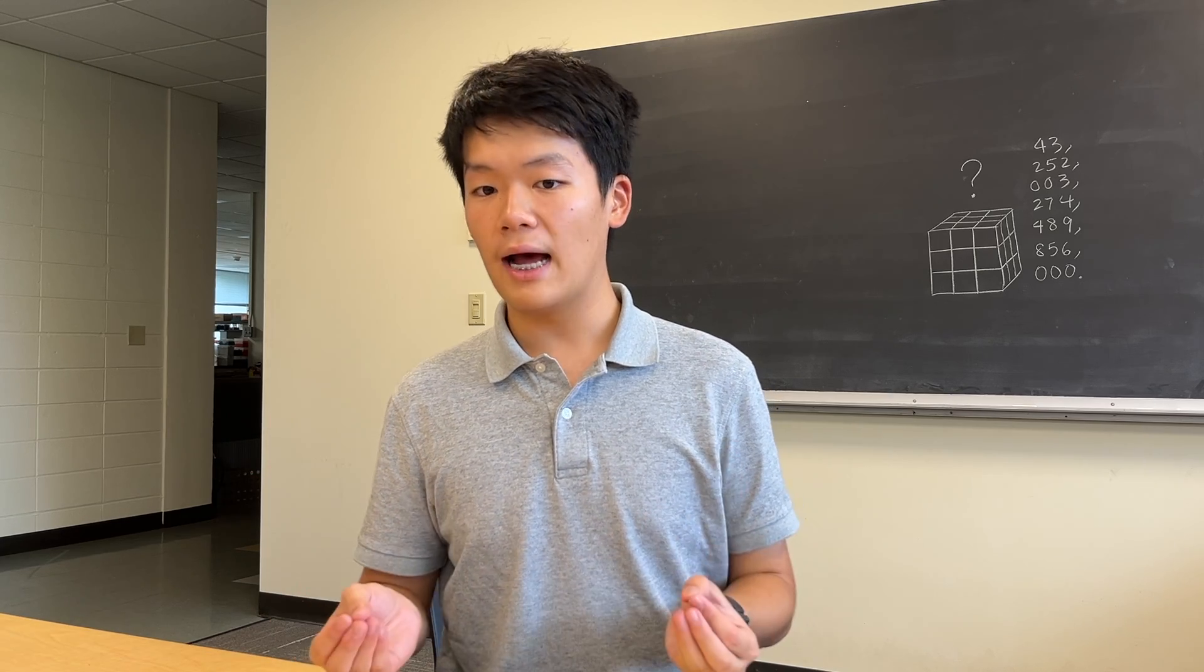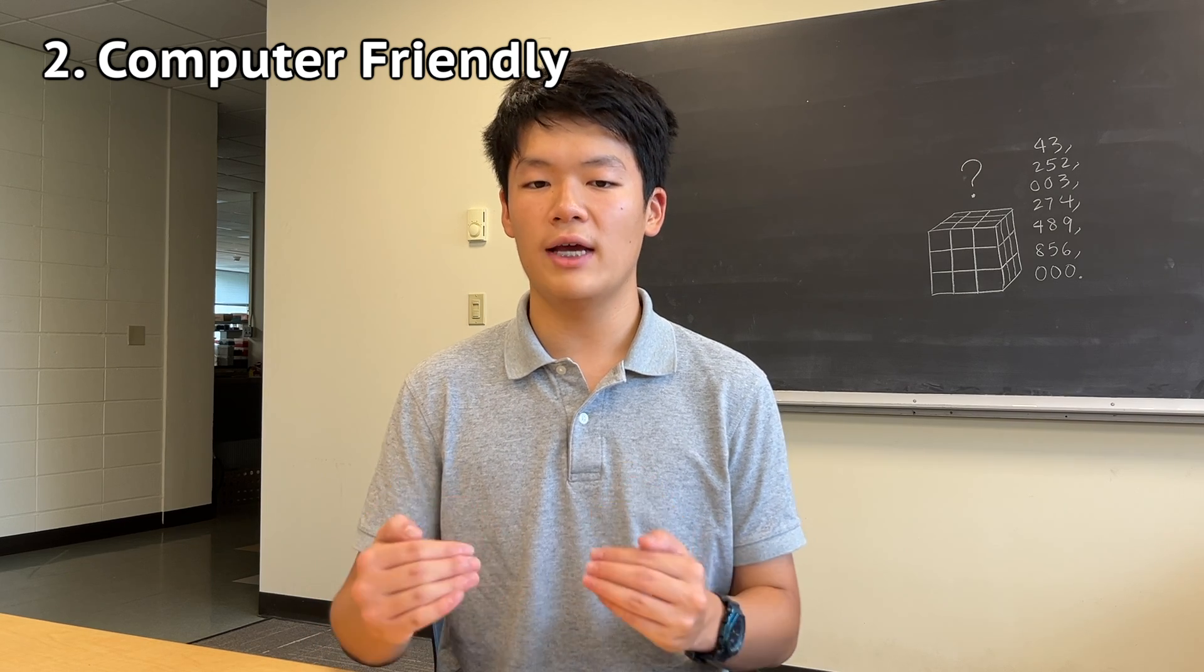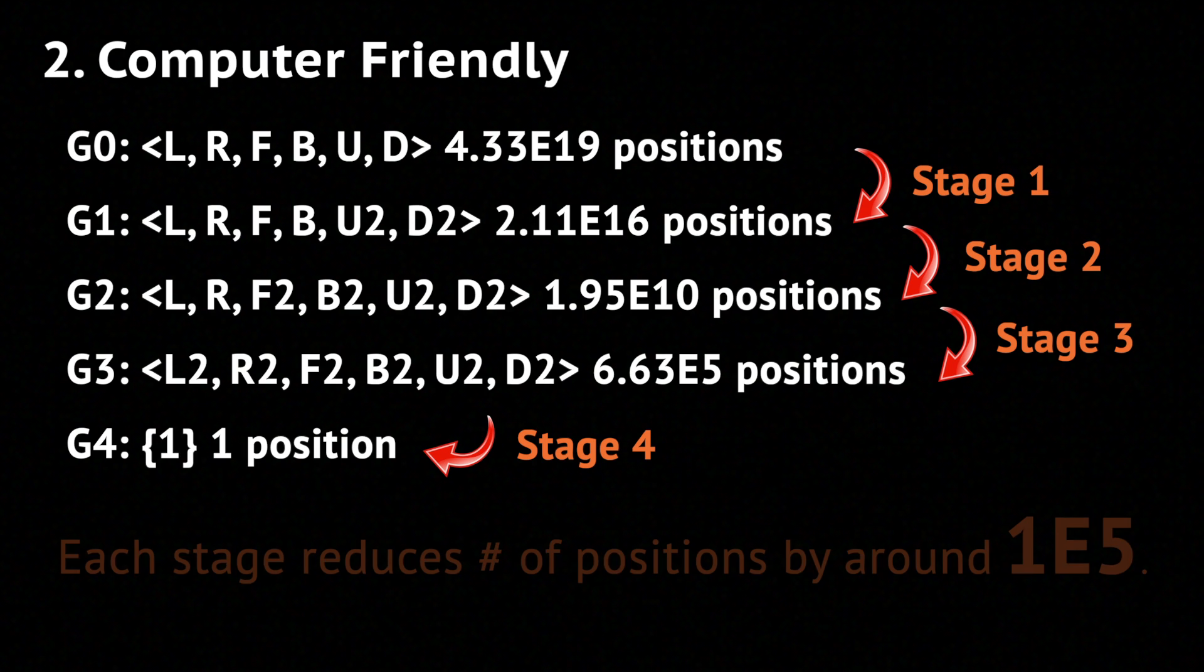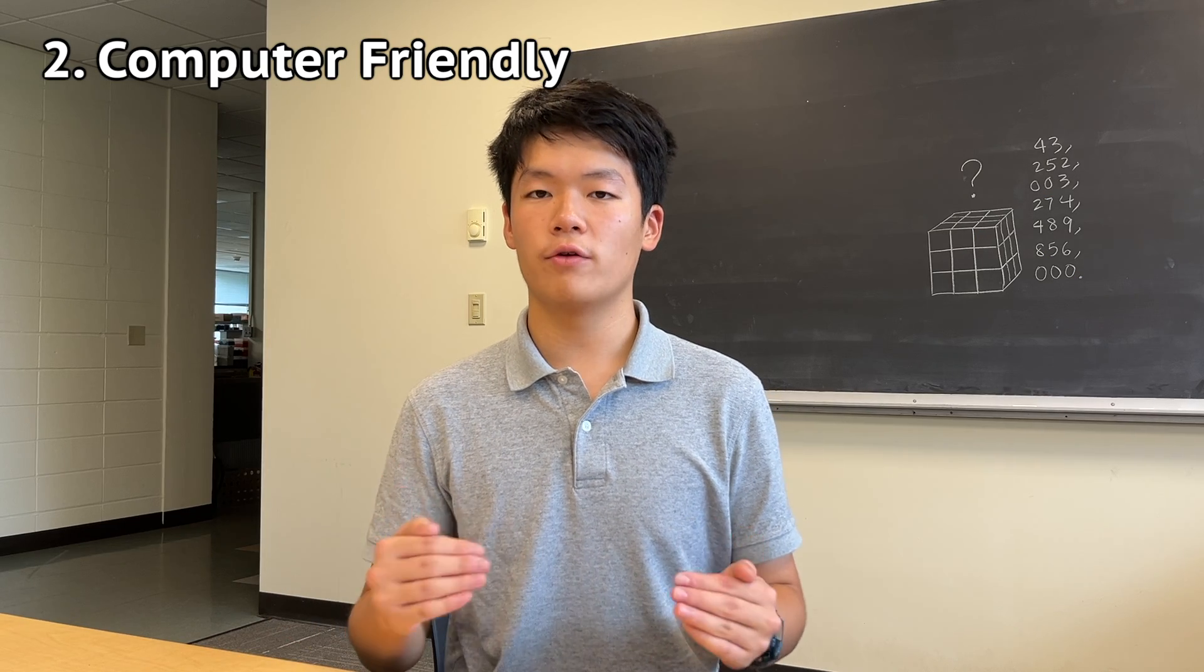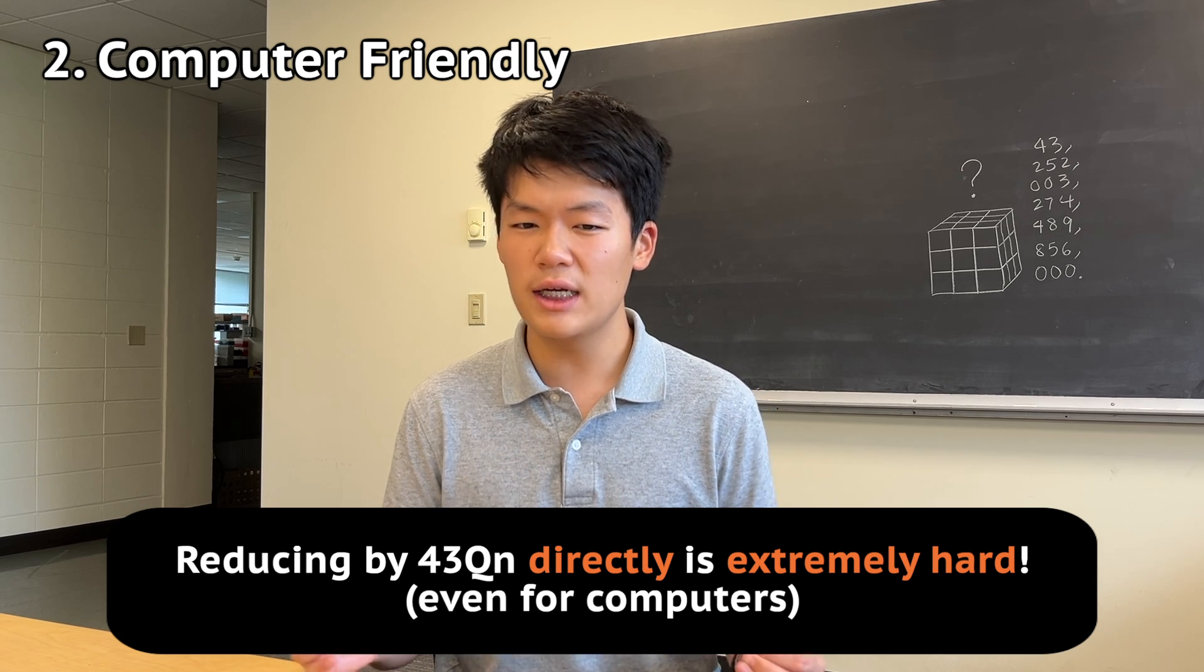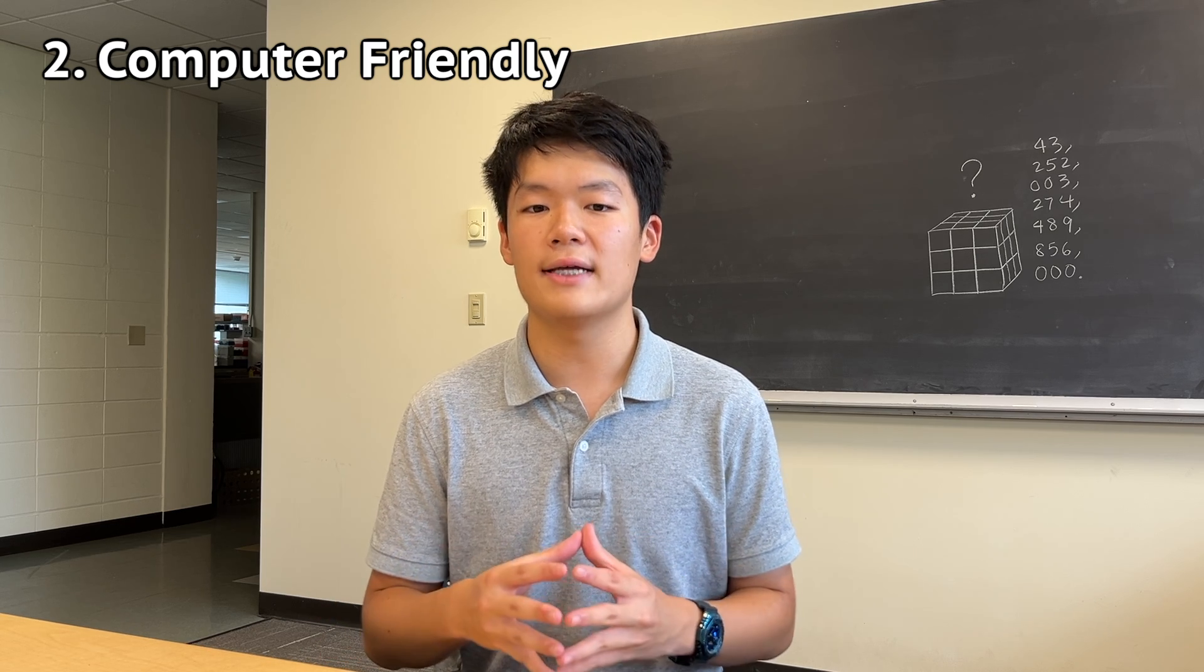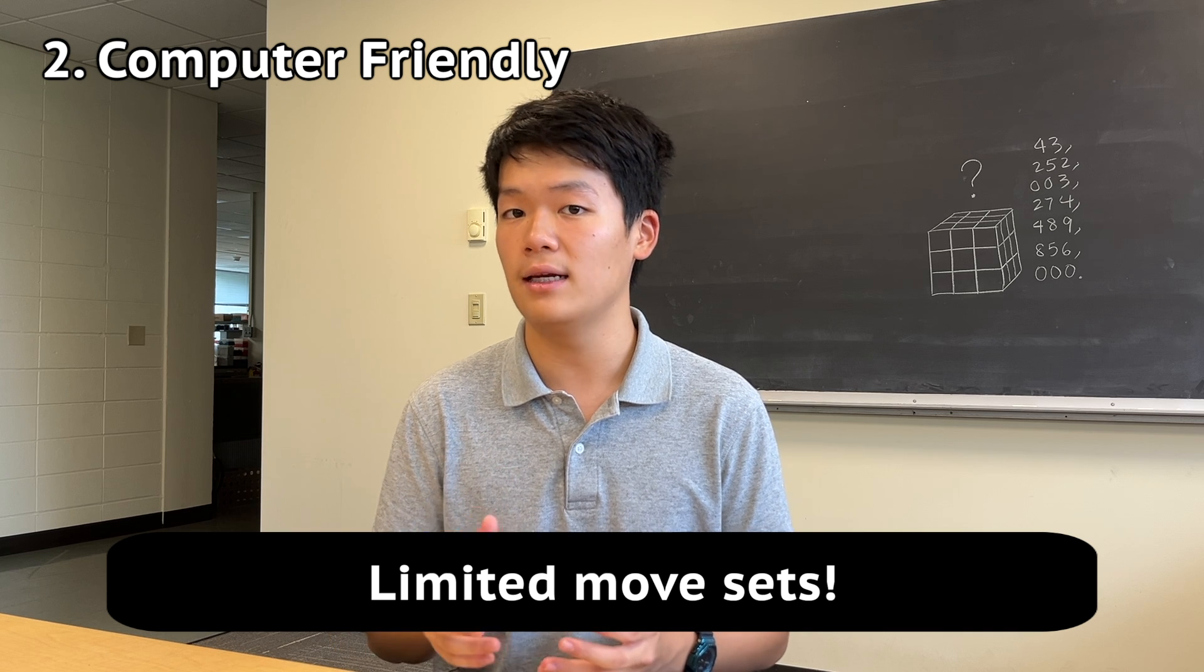Then you might ask, why is such a reduction method computer-friendly? Well, take a look at the number of cases in each group. It seems that during any of the four stages, the amount of possible scrambles is reduced by a factor of 10 to the fifth. When compared to trying to reduce all 43 quintillions possible scrambles to the solved case directly, this way is much easier and faster for computers to check. Each group also has a limited set of moves, which greatly reduces the number of checks needed by the computer.